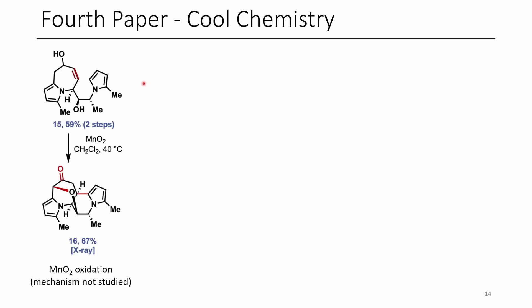Another cool result: they had an allylic alcohol and planned to oxidize it using manganese dioxide to the alpha,beta-unsaturated ketone. But instead they got a different product characterized by X-ray crystallography — it turned out they had formed a bond they actually wanted to form later, and simultaneously the alcohol engaged and formed a C–O bond. So two new ring systems were formed unintentionally when just trying to oxidize an alcohol to a ketone.